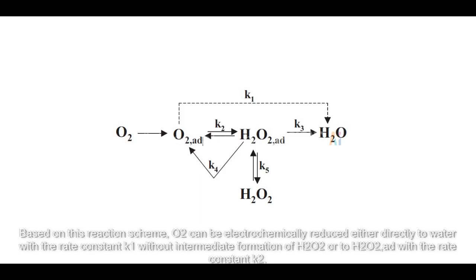Based on this reaction scheme, O2 can be electrochemically reduced either directly to water with the rate constant K1 without intermediate formation of H2O2, or to hydrogen peroxide with the rate constant K2.